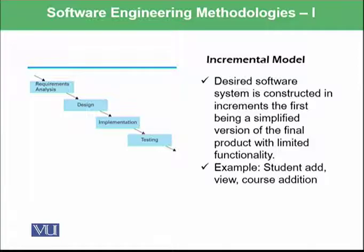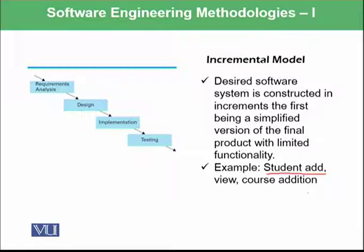In this example, we can only perform the requirement of student addition in the first iteration. This means in the first attempt, we consider that our software has only one requirement: that the student should be entered and added into the system. Once that has been done and verified by the customers and clients, we then add the next requirement such as viewing, and then the next, such as course addition.